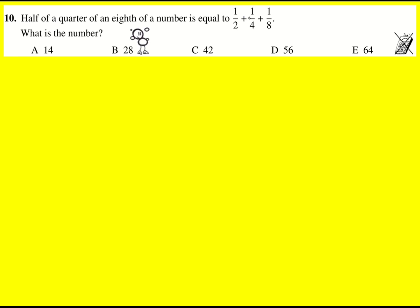Half of a quarter of an eighth of a number is equal to one half plus one quarter plus one eighth. What is the number?